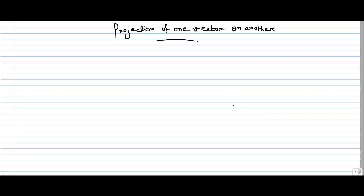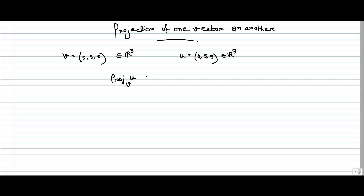Hello everyone. In this video let us try to calculate the projection of one vector on another vector. Let us begin with this example. Suppose I am taking a vector V which is (5,5,5), a vector in R3. Now suppose there is another vector U denoted by (0,5,5), also in R3. I want to calculate the projection of vector U on V — the projection of vector U in the direction of V.